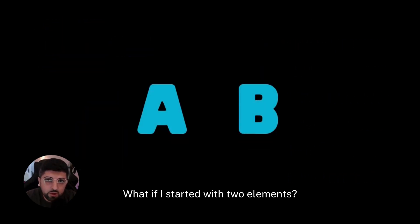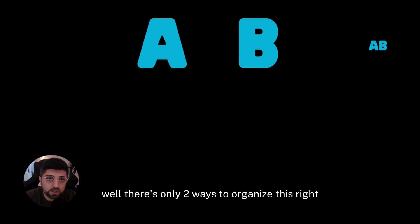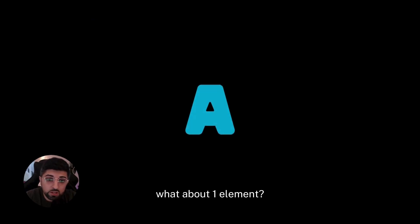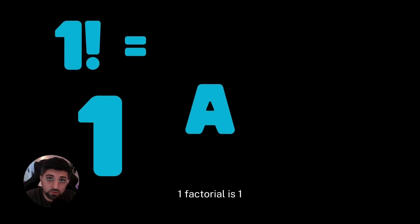What if I started with two elements? Well, there's only two ways to organize this, right? AB and BA. This means two factorial is two. What about one element? There's only one way. One factorial is one.